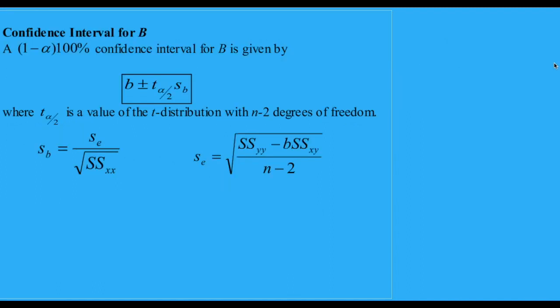When doing estimation, we would always want to construct the confidence interval for the parameter. So a confidence interval for B could be calculated using this formula here. So it is simply the estimated slope plus minus. We're going to use the T distribution and Sb, where Sb is given as the formula here. So do not worry about the formulas. Everything is provided. So the degrees of freedom for the T distribution when estimating the slope is n minus 2.